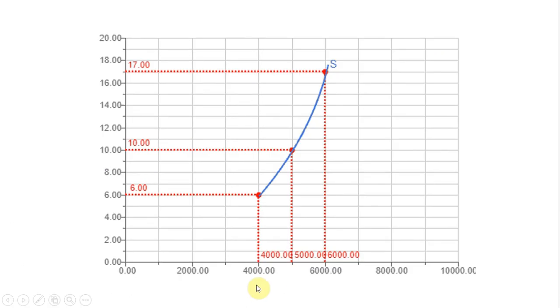All right, graphing that, here is the market supply curve, upward sloping market supply curve. Again, at a market price of $6, we saw on the table, 4,000 units would be brought to the market, at a price of $10 per unit, 5,000 units, and at a price of $17, 6,000 units would be brought to the market.